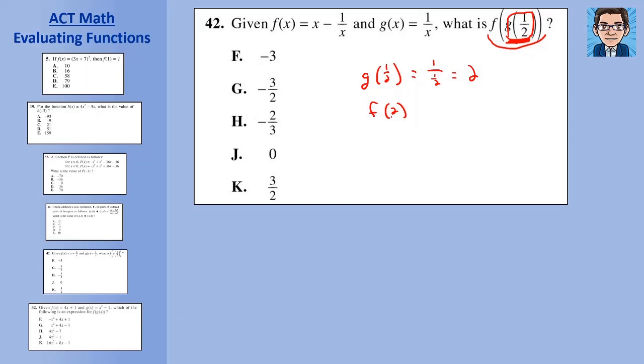Now that goes into the function f. f of 2 is 2 minus 1 over 2. I just put in 2 for each occurrence of x. 2 minus a half is one and a half, or three halves. Our answer is K.